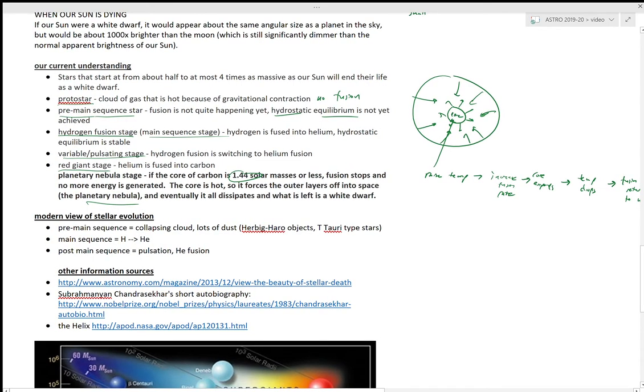So our modern view of stellar evolution: a pre-main sequence star, it's a collapsing cloud, you got lots of dust. There are examples of those we call them Herbig-Haro objects, oftentimes studied with infrared telescopes. T Tauri type stars - they're always named for the first star in a constellation where we observe this. Then there's the main sequence, hydrogen goes to helium. Post main sequence pulsation for some stars, and then helium fusion.